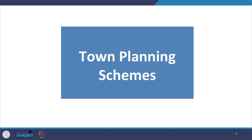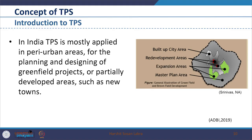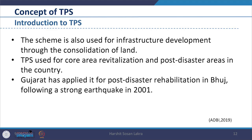Looking at the concept of Town Planning Scheme, Local Area Plans are part of the Development Plan. Town Planning Schemes are also part of the Development Plan and are the building blocks in realization of the development plan of the city. In India, Town Planning Scheme is mostly applied in peri-urban areas for planning and designing of greenfield projects or partially developed areas such as new towns. It is also used for infrastructure development through land consolidation, core area revitalization, and post-disaster areas. Gujarat applied it for post-disaster rehabilitation in Bhuj following a strong earthquake in 2001, though such cases are very limited.